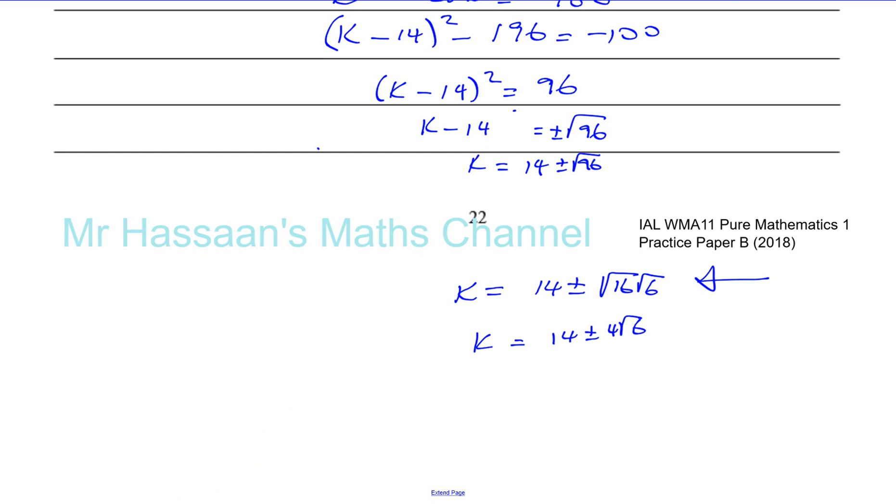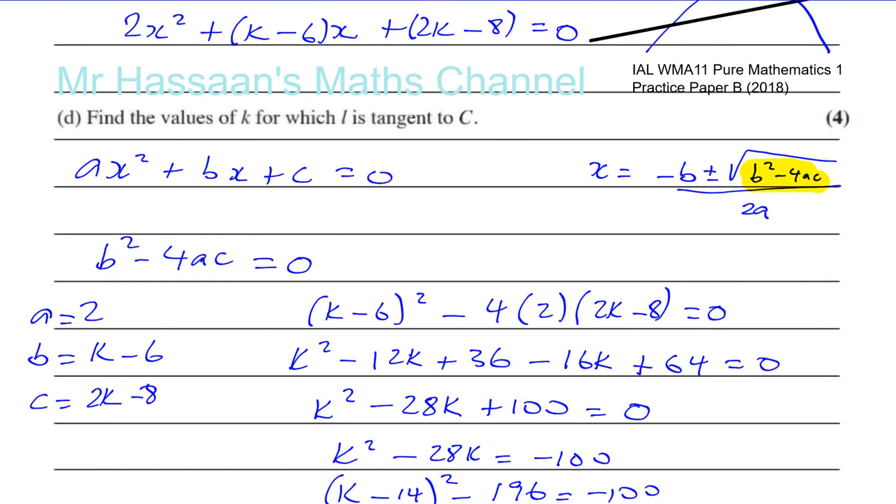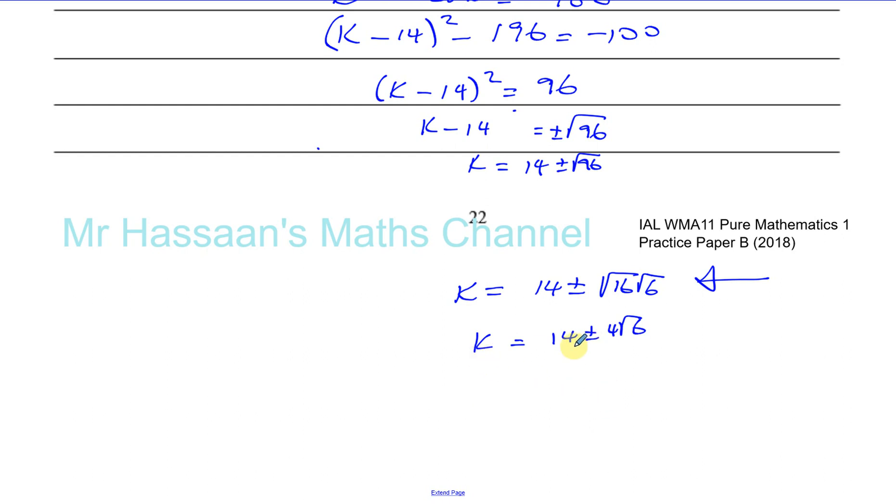So there we have, let's see what the question says. Find the values of k. Yeah, that's right. So those are the two values of k. 14 plus 4 root 6 and 14 minus 4 root 6. So these are the answers to that part of the question. And there we have the end of that question.